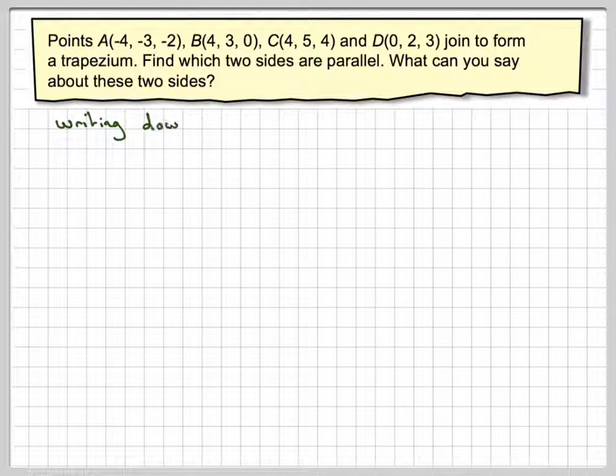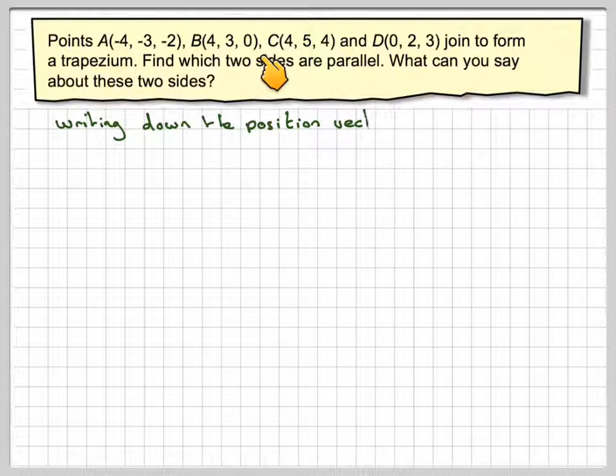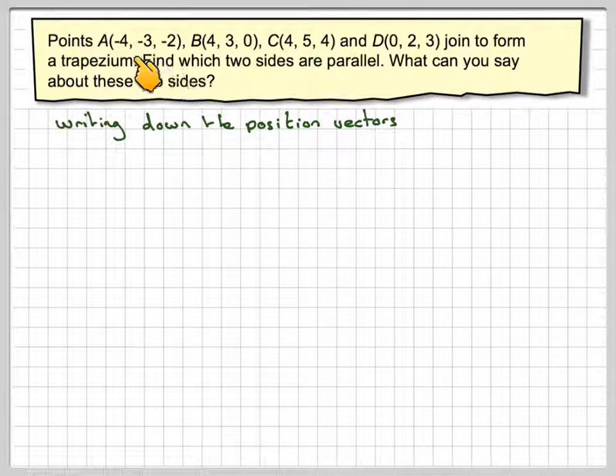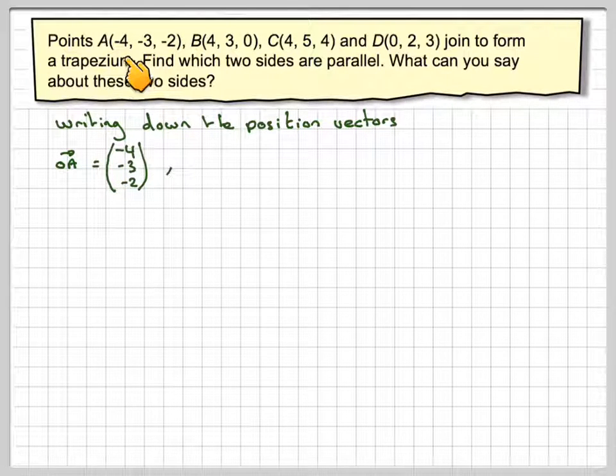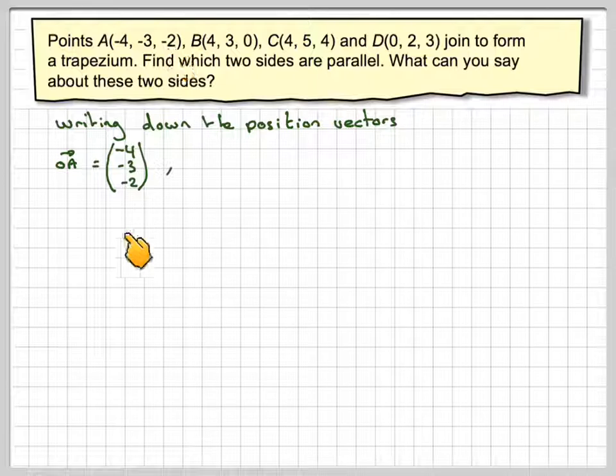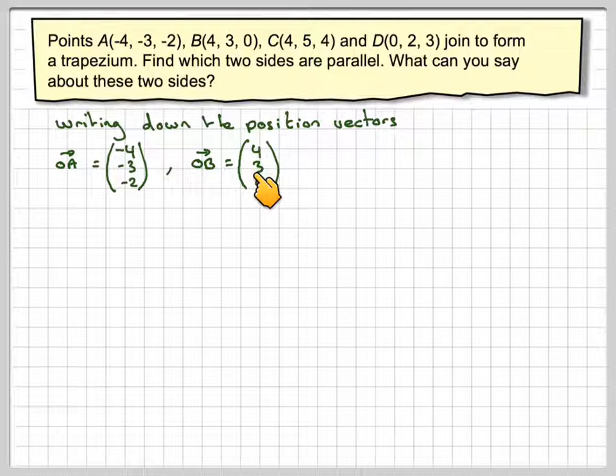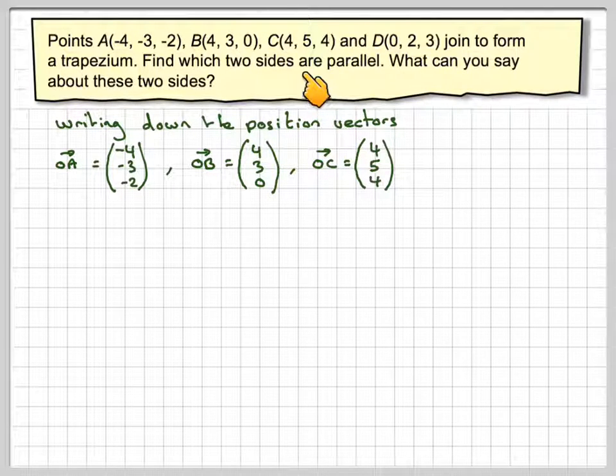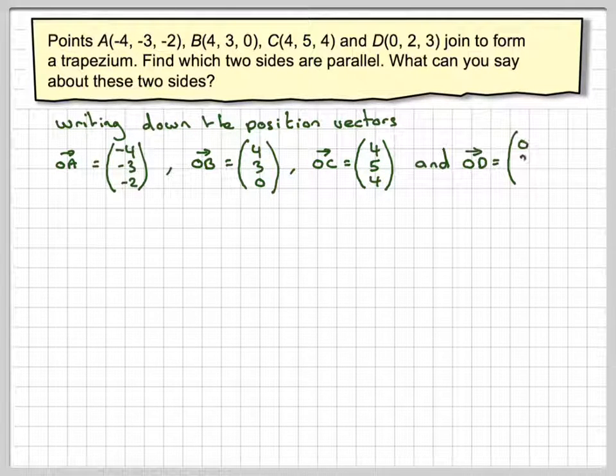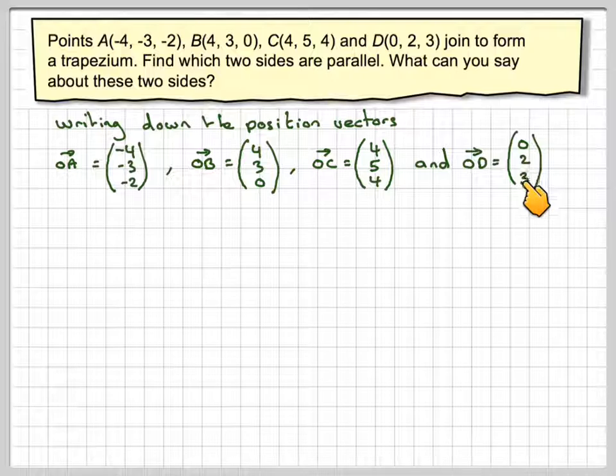What we need to do is write these coordinates as column vectors, writing them as position vectors in column vector form. So OA is going to be (-4, -3, -2), OB is going to be (4, 3, 0), OC is going to be (4, 5, 4), and OD is going to be (0, 2, 3).